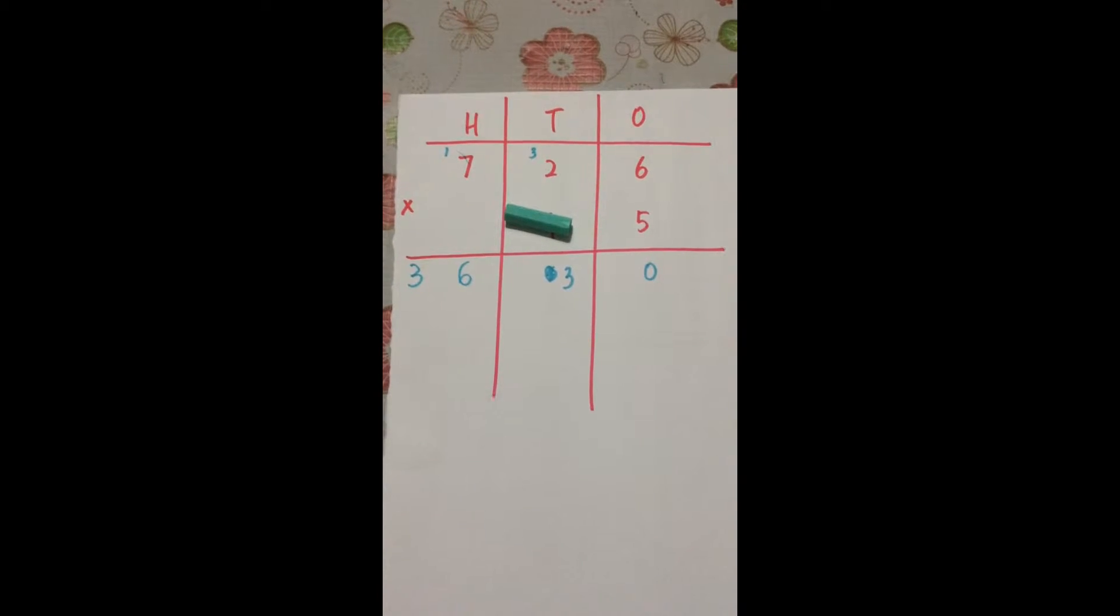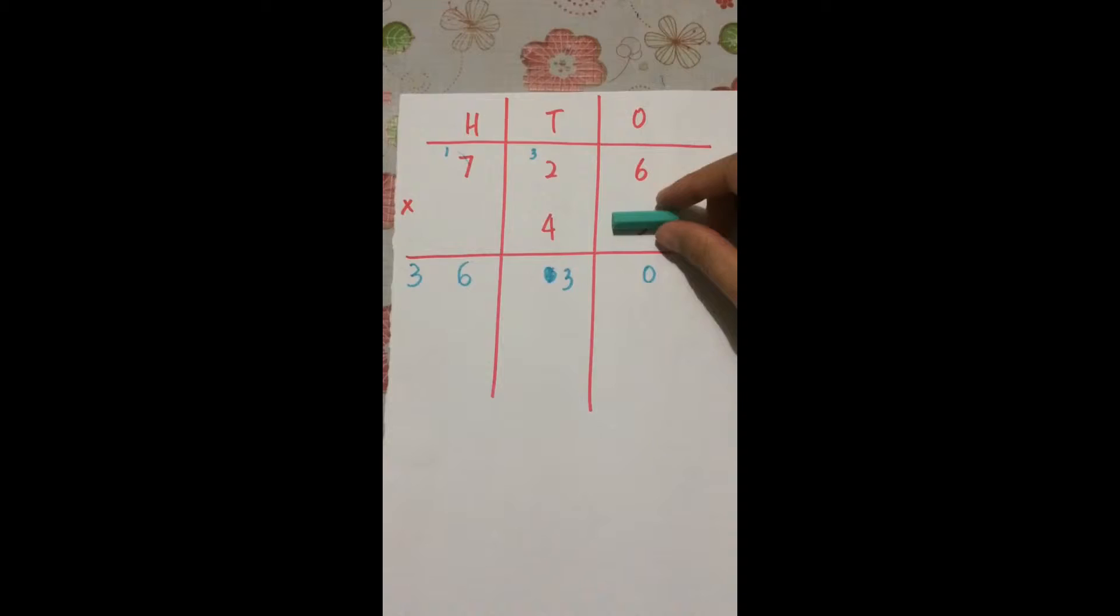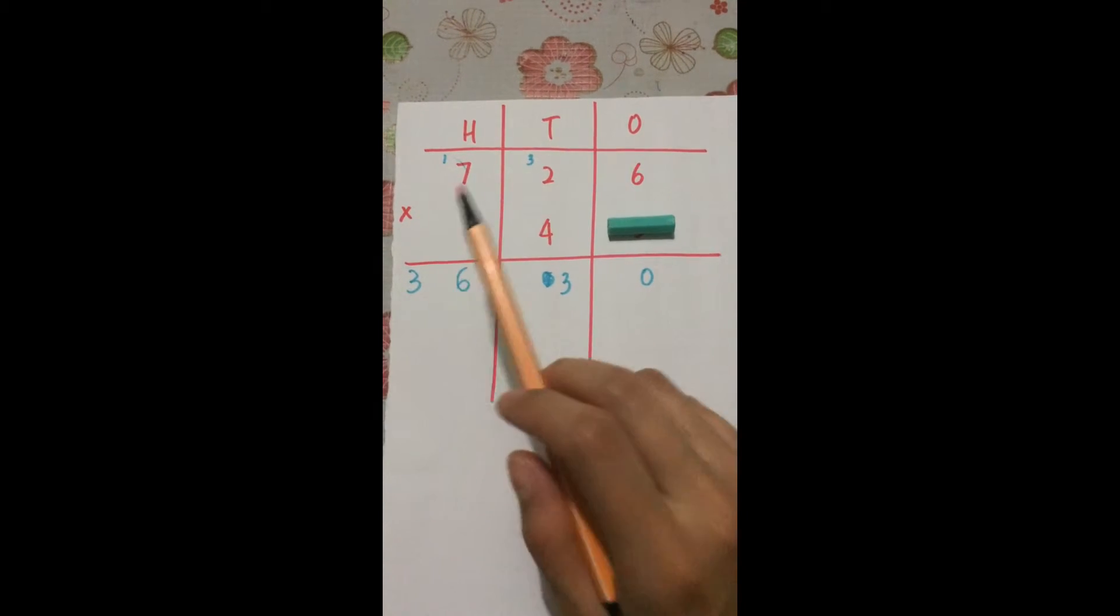Okay, second step, you cover number 5. So this time round, it's 726 times 4.